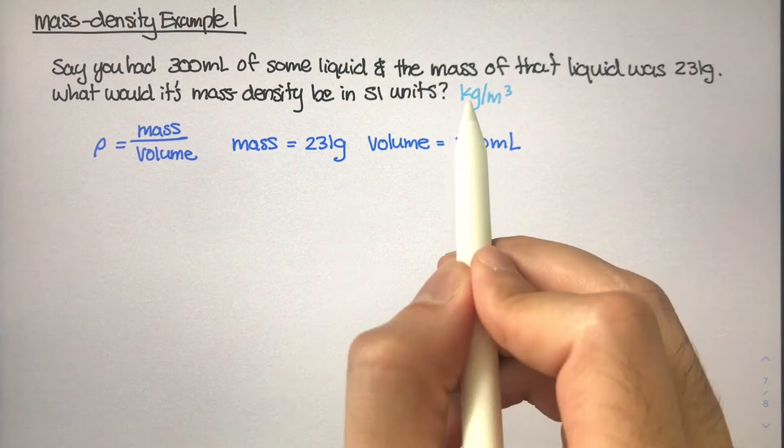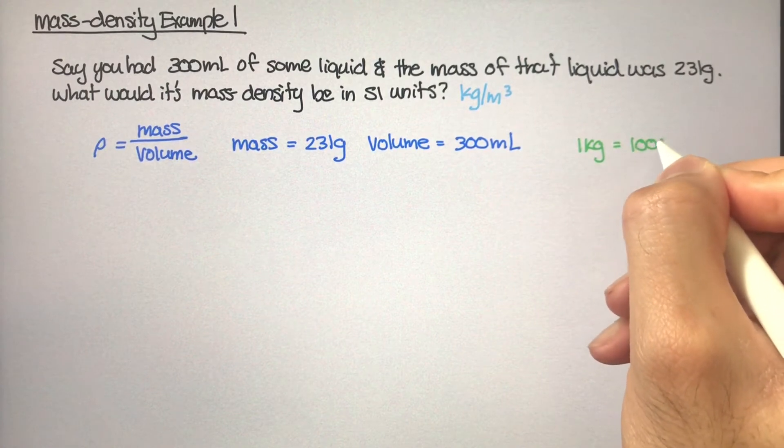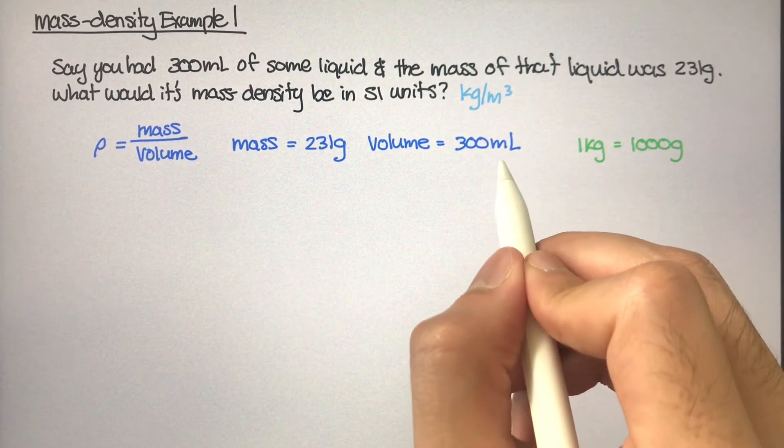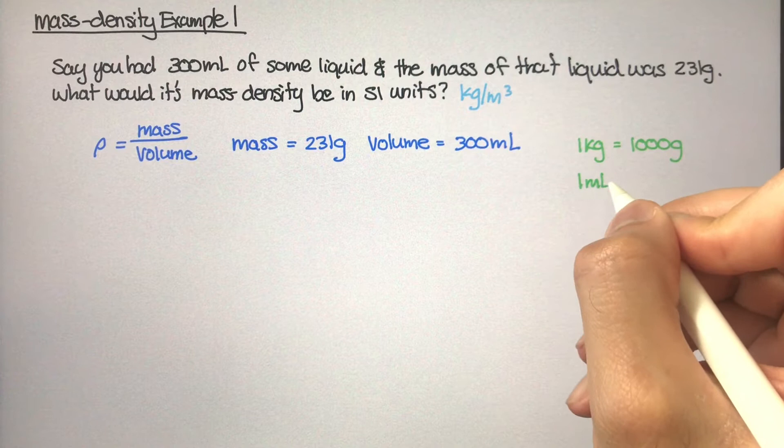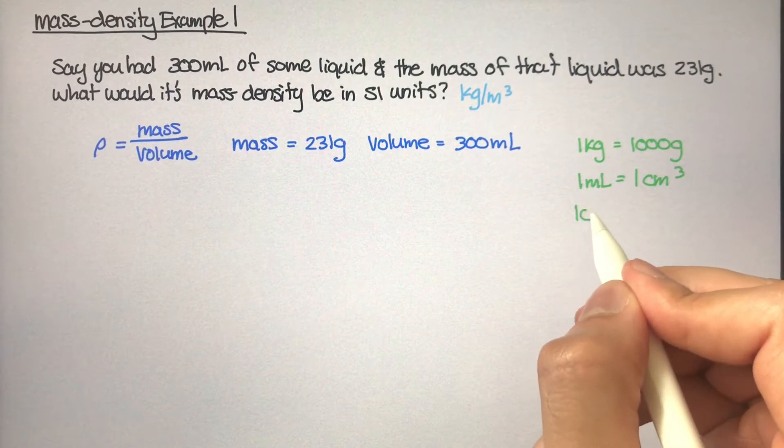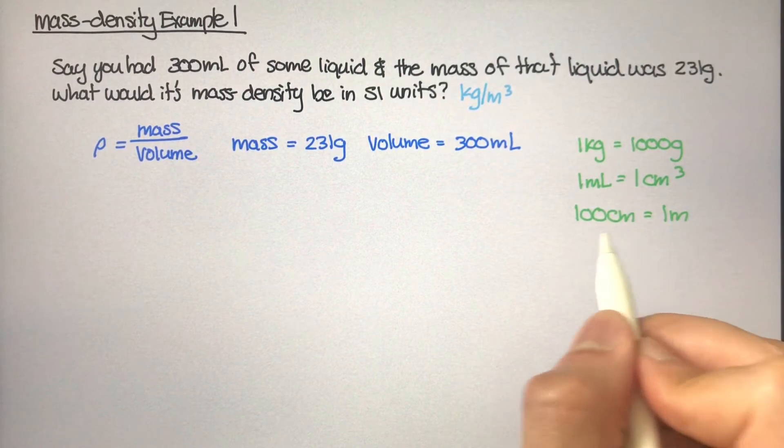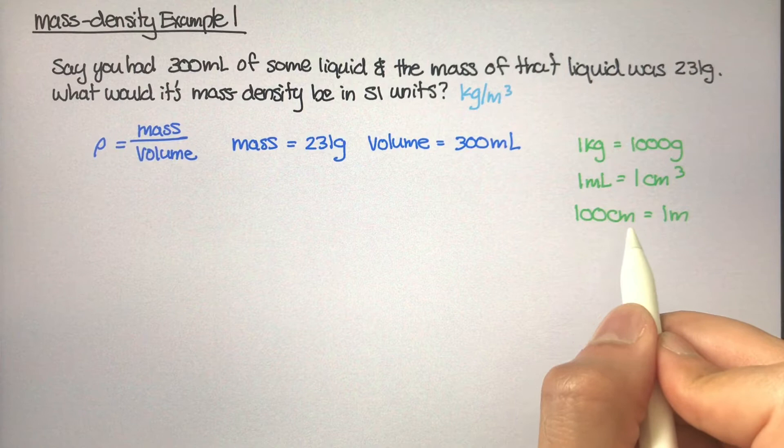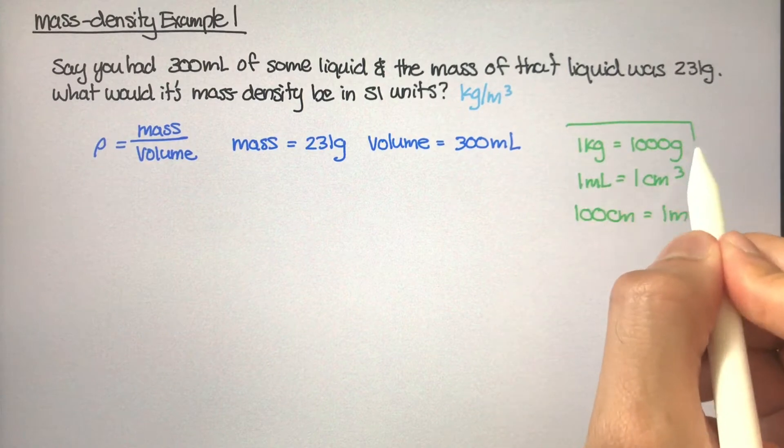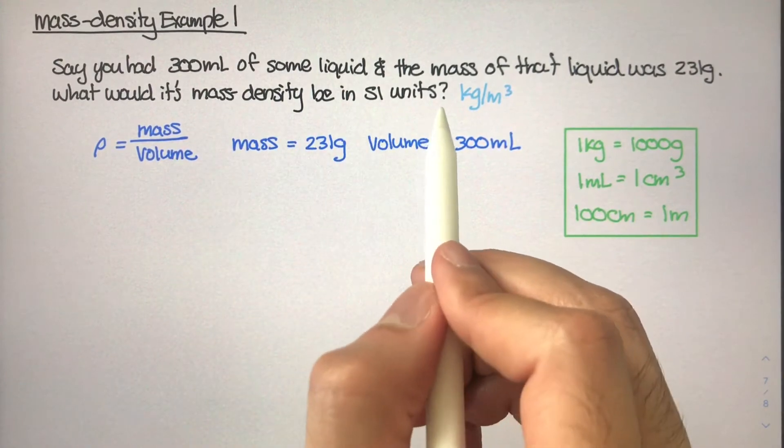Now there's a couple important conversions that we need to know. Firstly, we need to get grams in units of kilograms. We know that one kilogram equals 1000 grams, so we're going to need that in a future calculation. And for milliliters, one milliliter is really equal to one centimeter cubed. We also know that 100 centimeters equals one meter. This last conversion is a linear conversion between a length, not a conversion between volume. We can use these three conversions to figure out what this mass density is going to be in SI units.